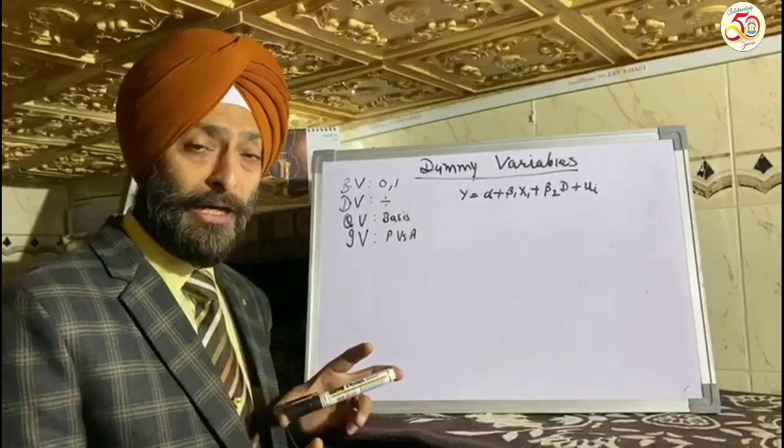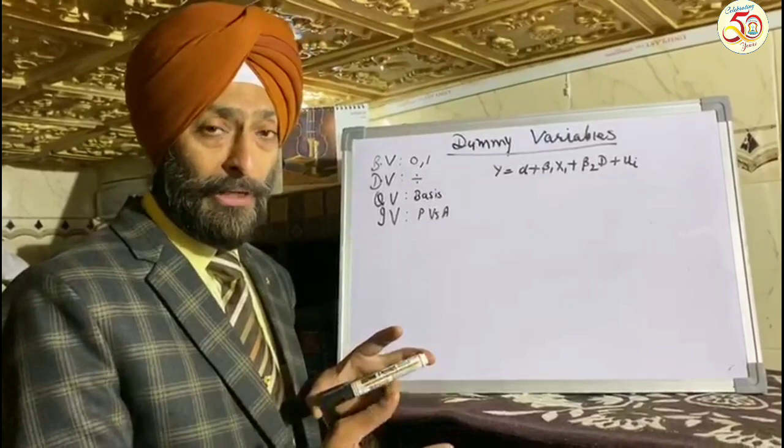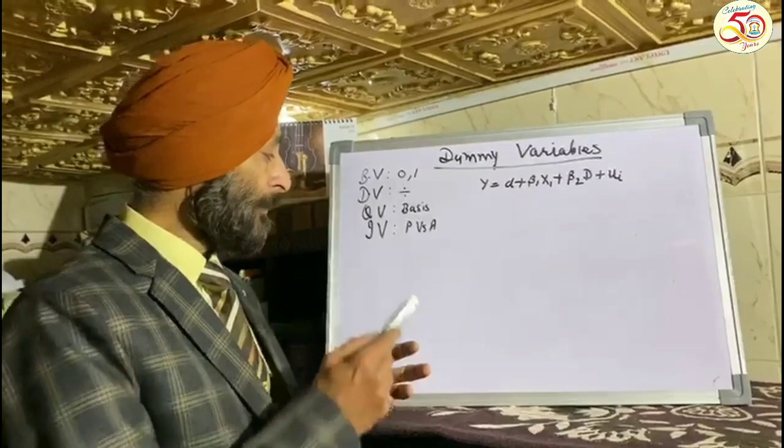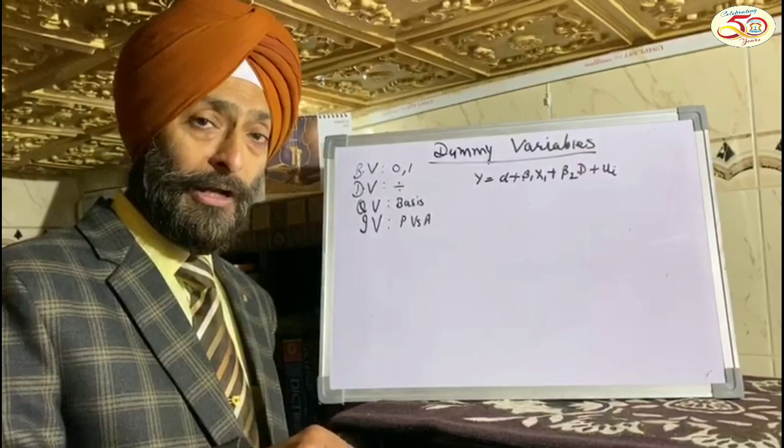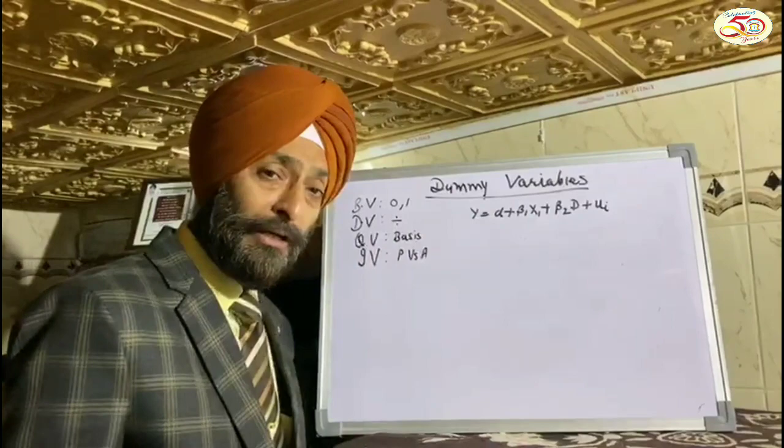It is called dichotomous variable because it divides the variable into two categories, that is implied or unimplied, male, female, rural, urban, and so on. Sometimes it is called qualitative variable because on the basis of quality it divides the variable into two parts, that is having a quality or not having that quality.